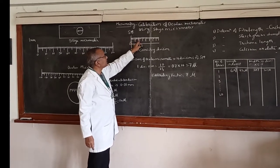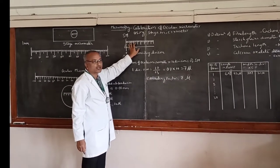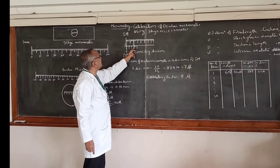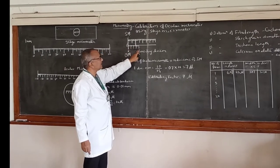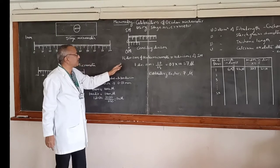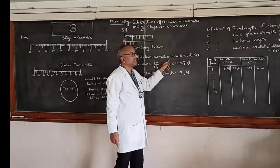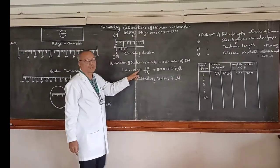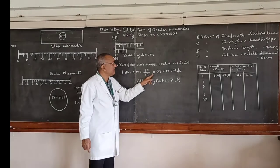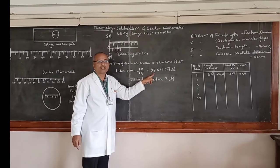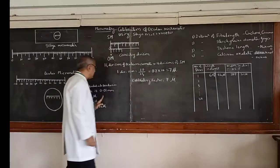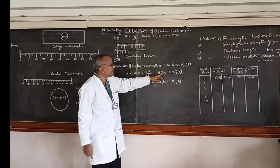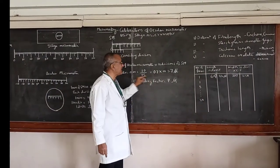We have identified the coinciding division of the stage micrometer, which aligns with the 14th division of the ocular micrometer. For calibration purposes: 14 divisions of the ocular micrometer equals 10 divisions of the stage micrometer. Therefore, 1 division of the ocular micrometer equals 10 divided by 14, which equals 0.714. This value, multiplied by 10, gives the calibration factor.